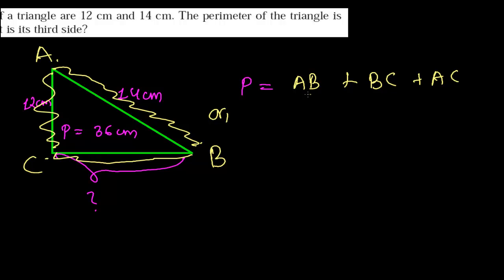And now let me put the value of P. Perimeter we have got is 36. So what I can write now? 14 plus 12,